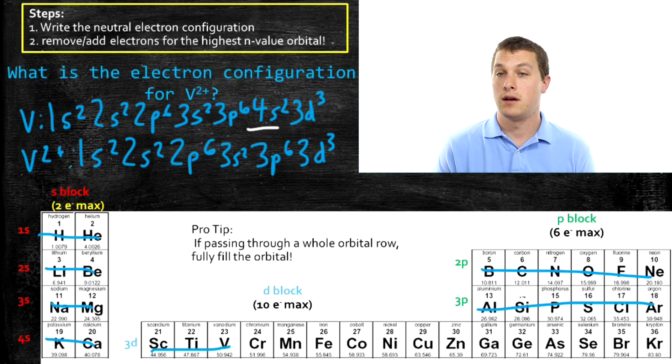So, the correct electron configuration for Vanadium 2 plus has no 4S electrons.